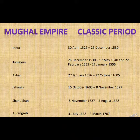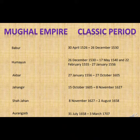Babar ruled from 30 April 1526 to 26 December 1530. Humayun ruled from 26 December 1530 to 17 May 1540, and again from 22 February 1555 to 27 January 1556. Akbar's time period was 27 January 1556 to 27 October 1605. Jahangir was 15 October 1605 to 18 November 1627. Shah Jahan was 8 November 1627 to 2 August 1658. And Aurangzeb was 31 July 1658 to 3 March 1707.